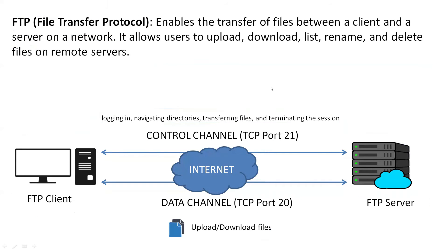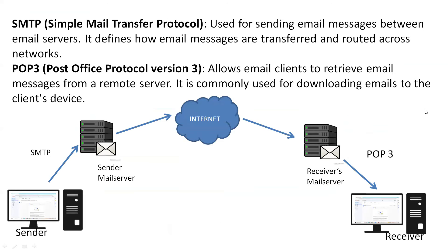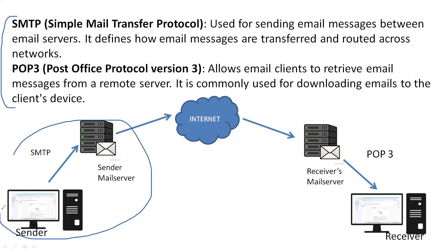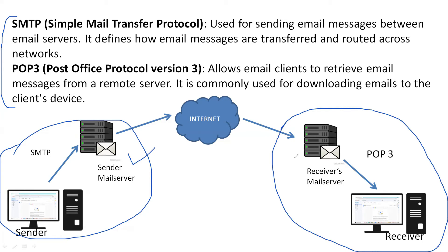The next protocols are SMTP and POP — Post Office Protocol. These two protocols are used to send and receive email on mail servers. By the help of SMTP, you can forward emails to the nearest mail server. By the help of POP, you can retrieve emails that have been received on the mail server — it is used to download emails from your mail server.